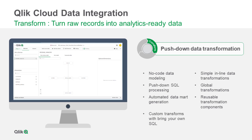The data transformation features help you quickly turn raw records into analytics-ready data via auto-generated pushdown SQL. It works by creating a reusable pipeline of data models, rules, and tasks that generate the SQL. When the warehouse executes the code, the raw transactional data is transformed to match your user-defined data models, marts, or custom formats.